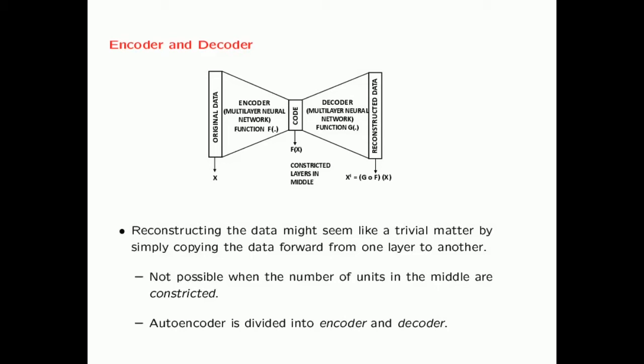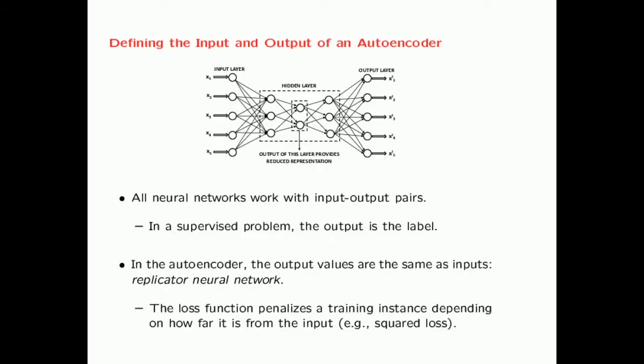It might seem that reconstructing the data from the input to the output is a trivial matter. One might ask: can't I just copy the data forward from one layer to another to replicate the input at the output? However, as you may have noticed, the hidden layers contain fewer units than the input layer or the output layer. For example, the input layer has five units, the next layer has three, and the innermost layer has only two units.